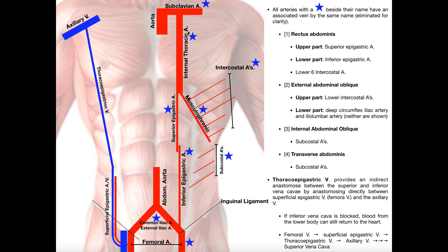The internal thoracic artery is going to have two major branches. One of them is the musculophrenic artery, and that itself is going to have several branches — these are going to be some of the intercostal arteries. The intercostal arteries run through the intercostal spaces, that is the spaces between adjacent ribs. We have muscles in there like the external and internal intercostals, but it turns out that these intercostal arteries can also play a role in supplying blood to some of these abdominal wall muscles.